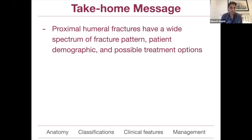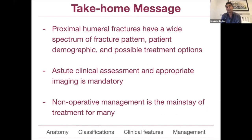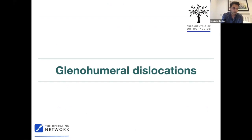There's also a small RCT comparing the deltopectoral approach versus the McKinsey superolateral deltoid-split approach, which found surprisingly better SF-12 and QuickDASH scores with the deltopectoral approach - which is what most UK surgeons use. Take-home messages for proximal humerus fractures: wide spectrum of fracture patterns and patient demographics; be astute in clinical assessment; don't forget neurology, vascular status, and whether the head is in joint; get a CT if concerned; and non-operative management is the mainstay of treatment for the majority.